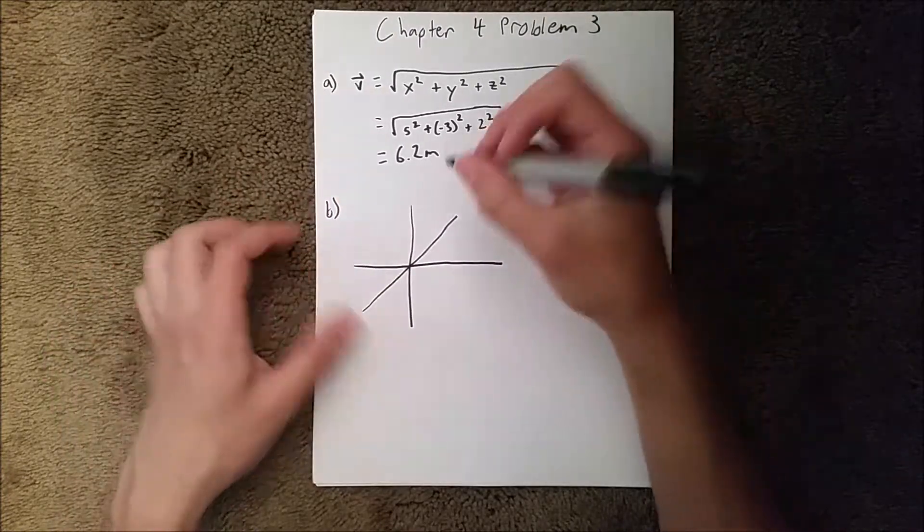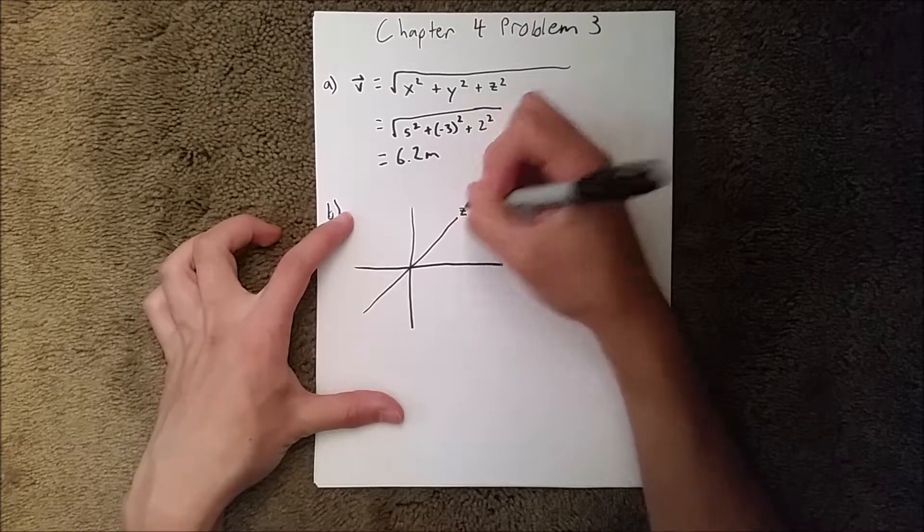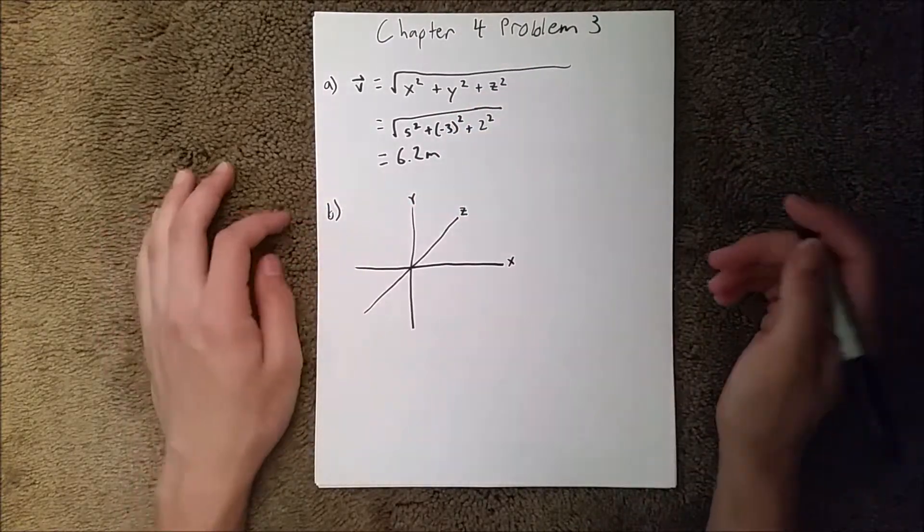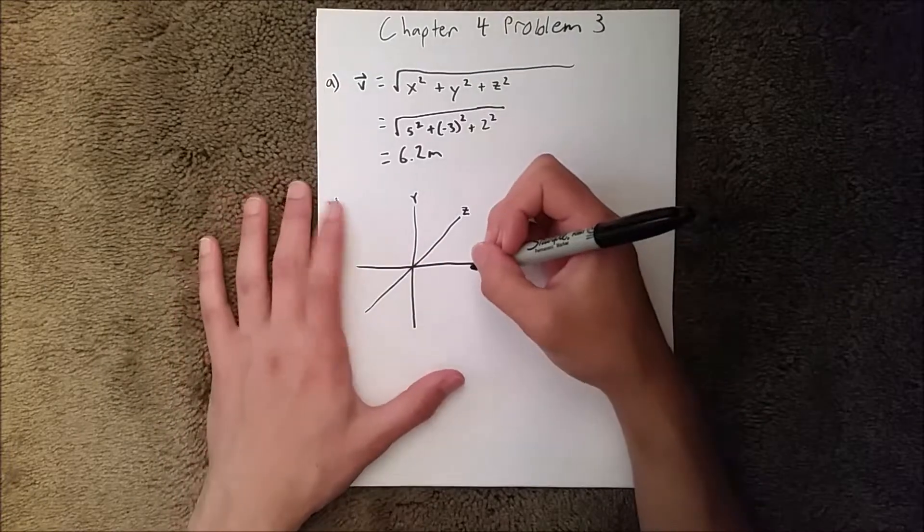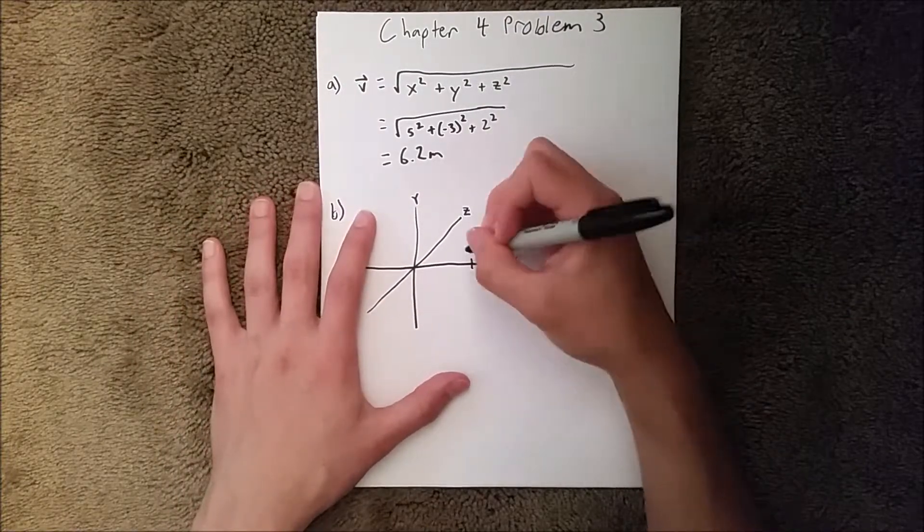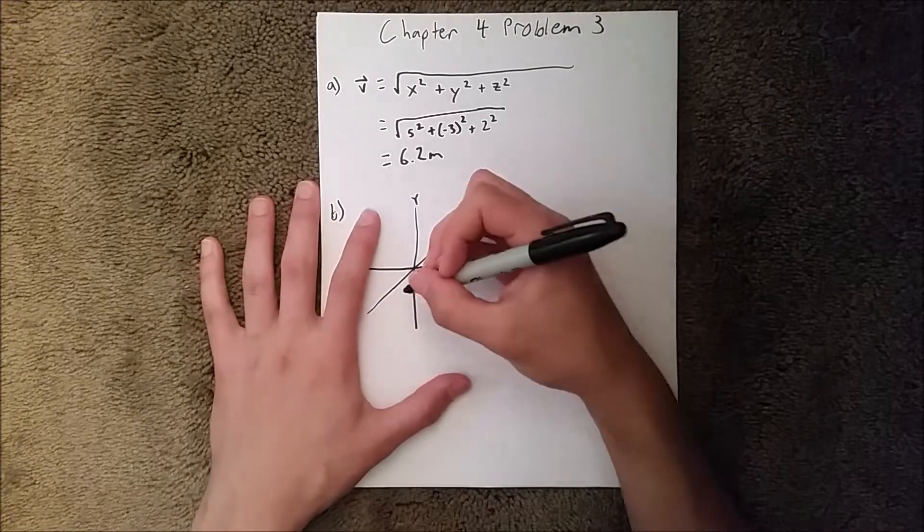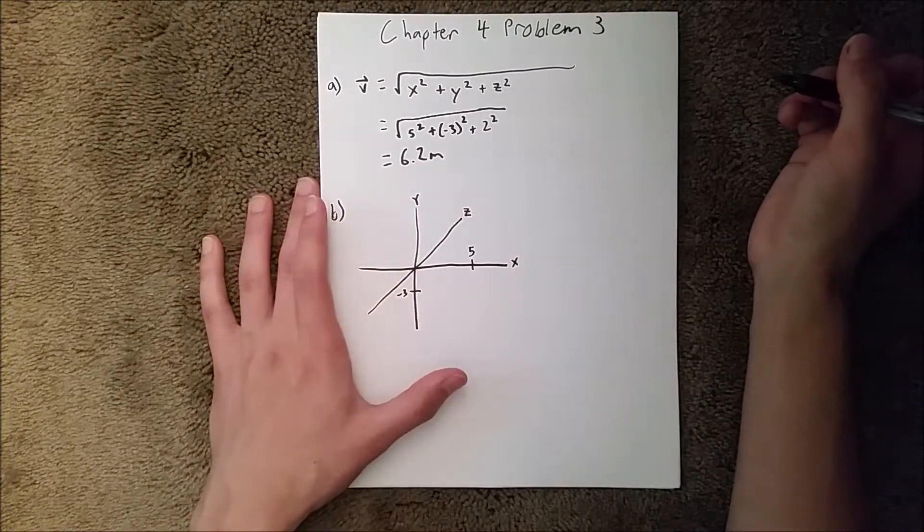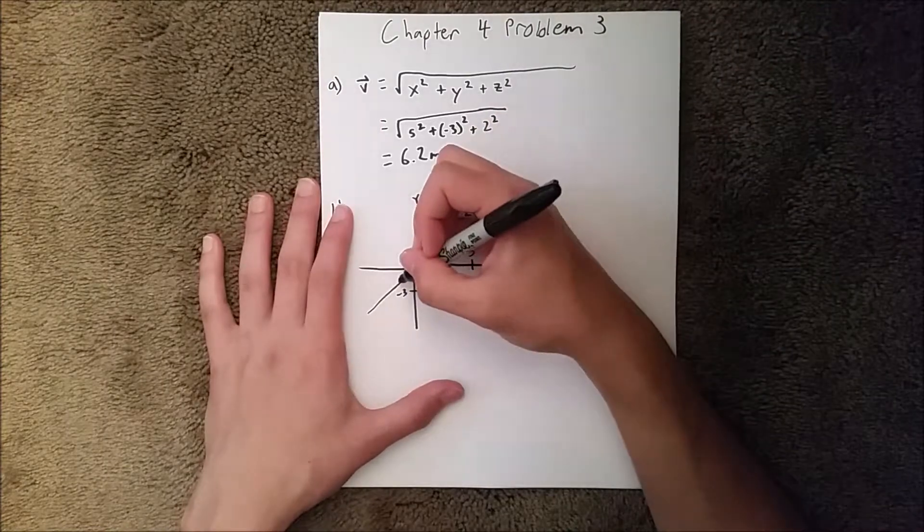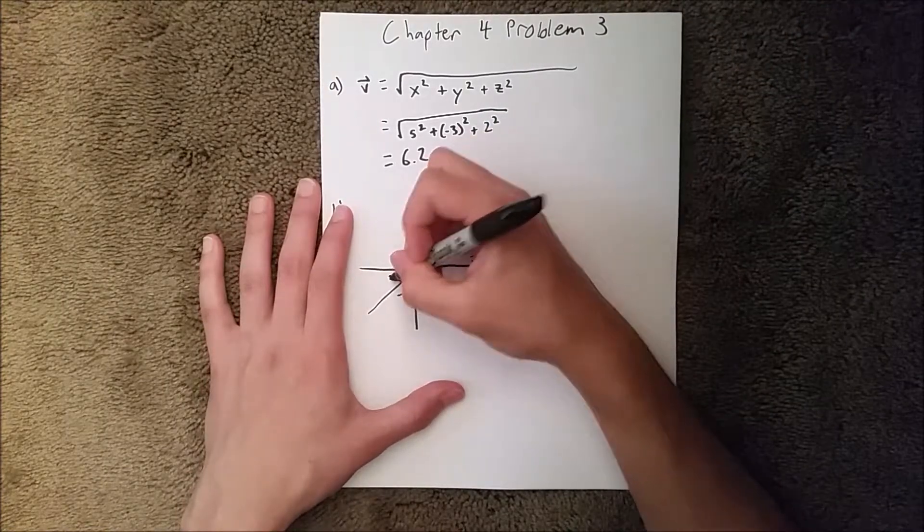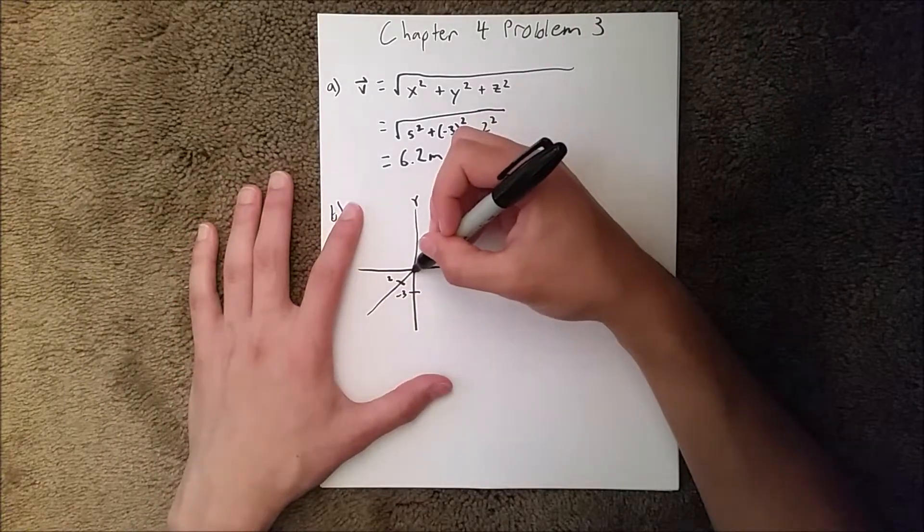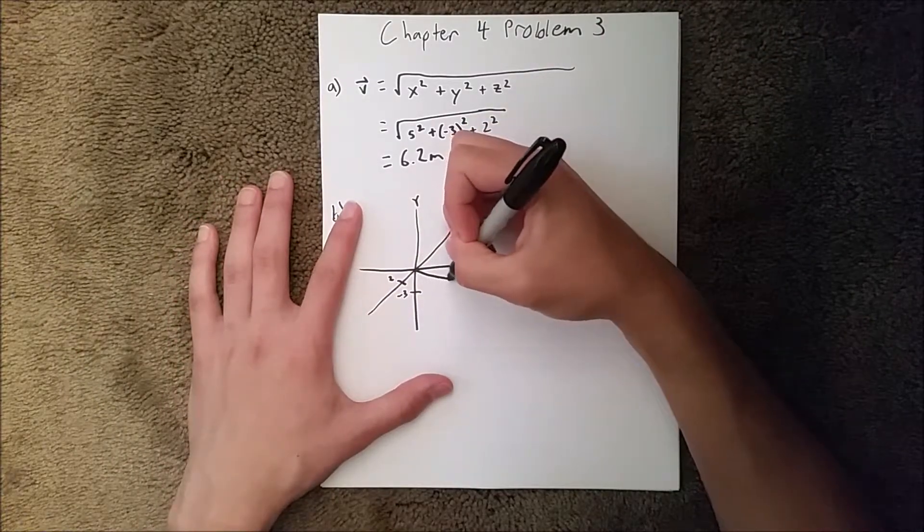So try to picture this in three dimensions. So this is our z-axis, our y, and our x. And it says that the vector is five units in the x, so we'll say that's five. Negative three in the y, we'll say that's negative three. And two in the z, so we'll say about there is two. So our three dimensional vector will go something like that.